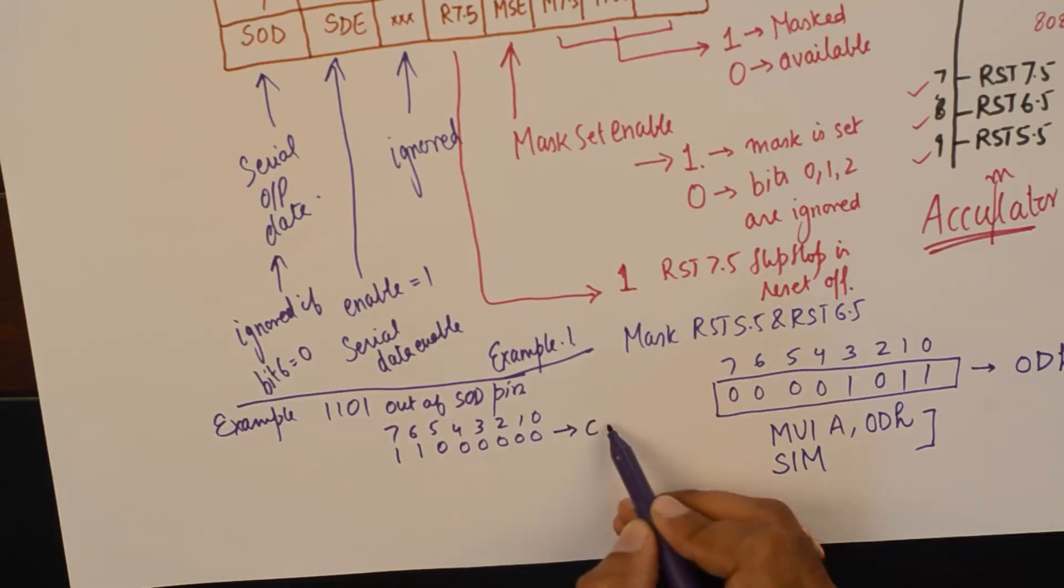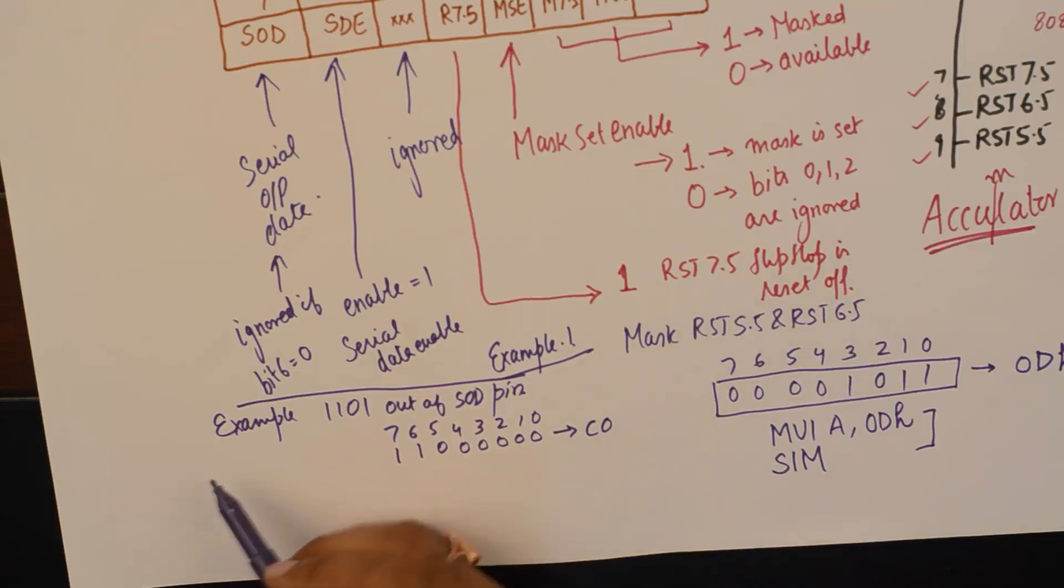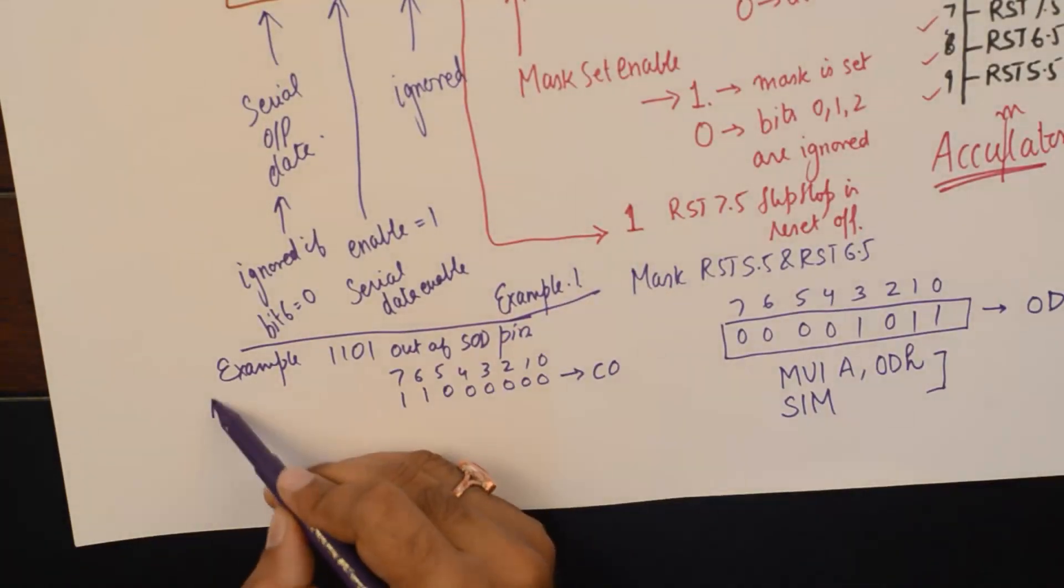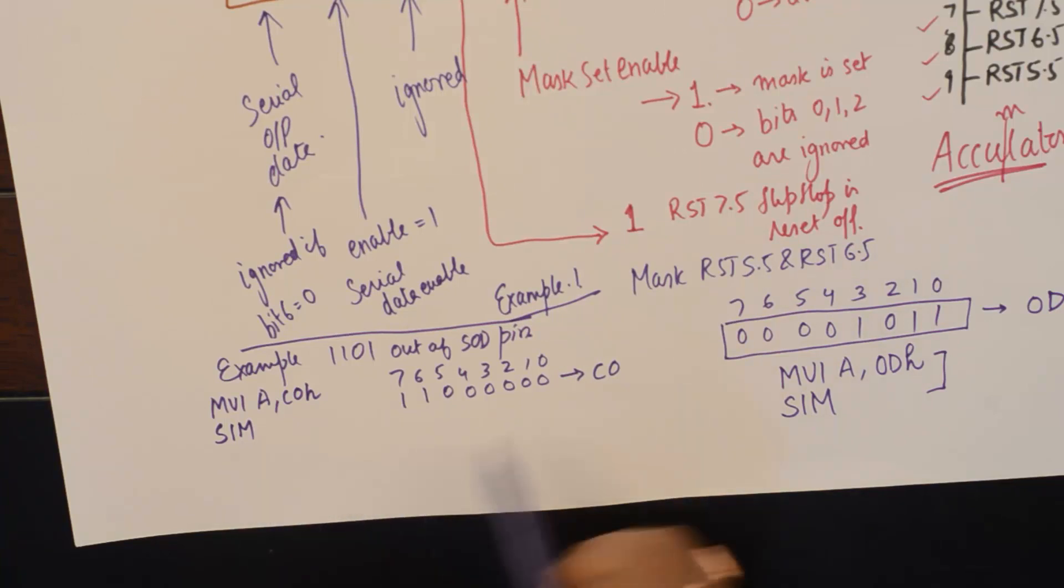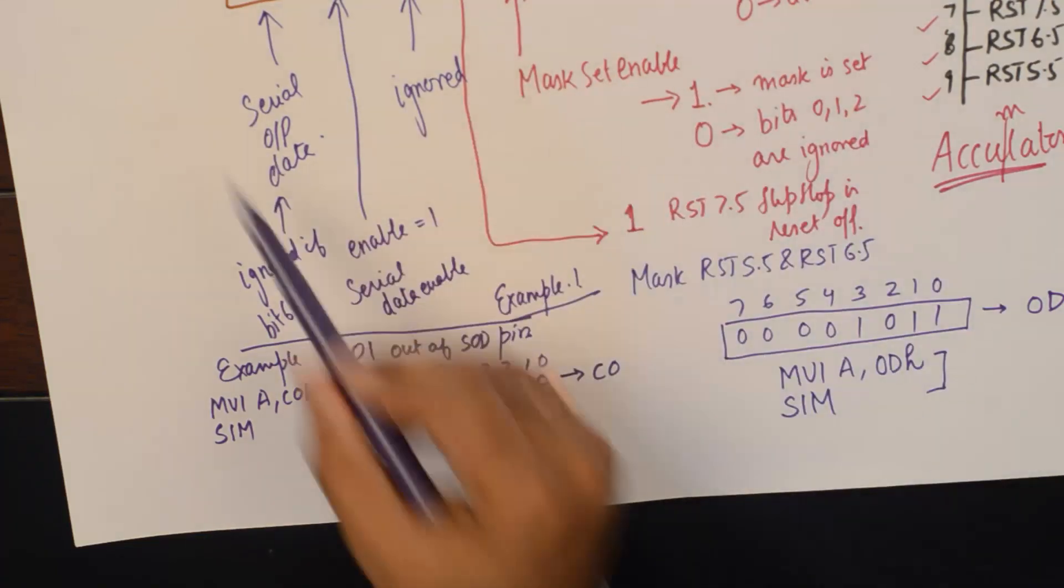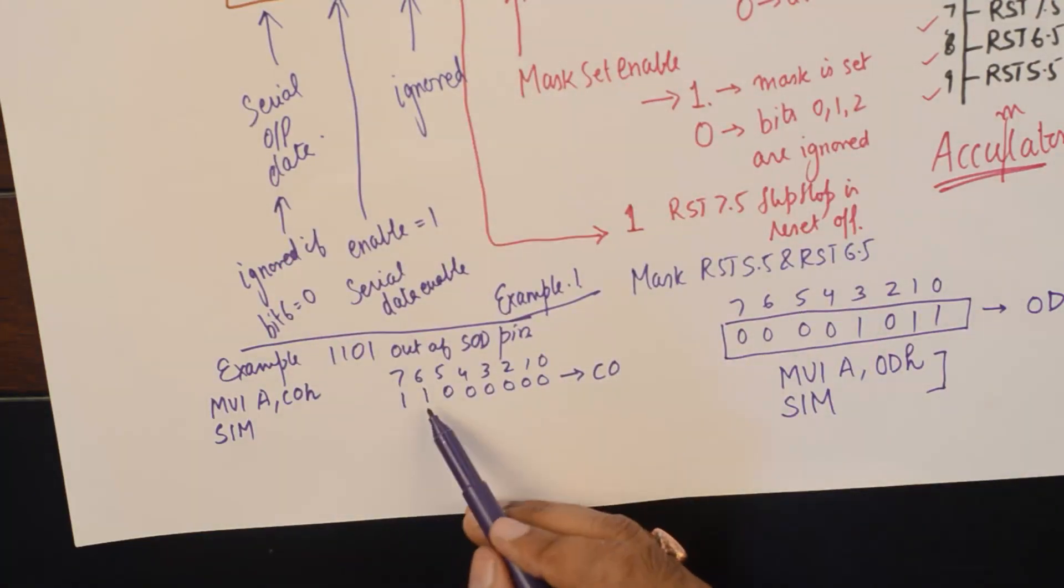So this becomes a C0. So I will do MVI A, C0H and SIM. Now, when I will do SIM, it will check the bits of A and it will do whatever we have learned so far. It will see that serial data is enabled and I wish to send 1.